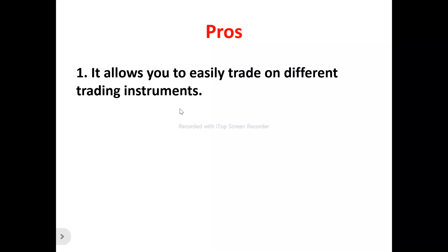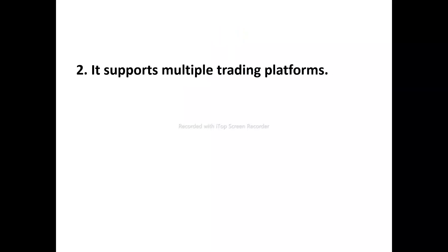Number one: it allows you to easily trade on different trading instruments. FxOpen makes it very easy to trade on different trading instruments, so you're able to choose from the different types of trading instruments that they support. You can use any one that is aligned with your trading strategy and style. It supports multiple trading instruments like indices, commodities, cryptocurrencies, currencies, and ETFs, to help maximize your trading profits and experience.